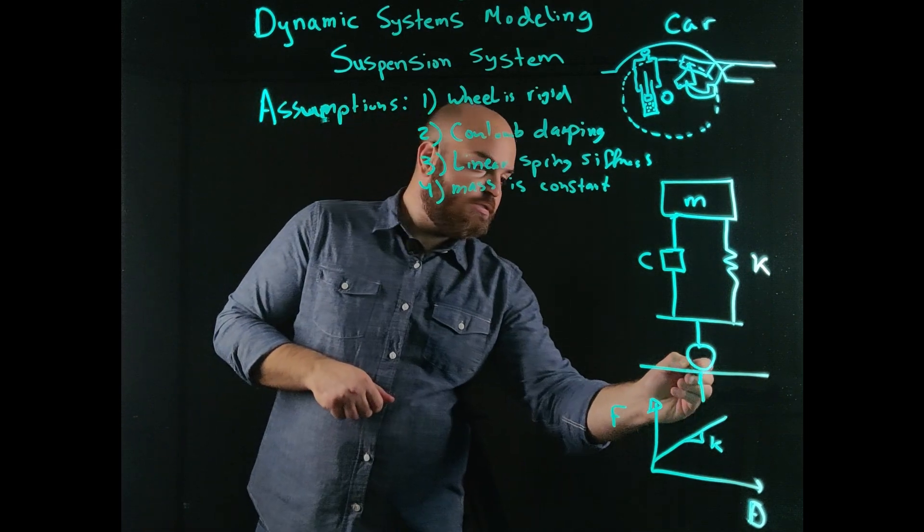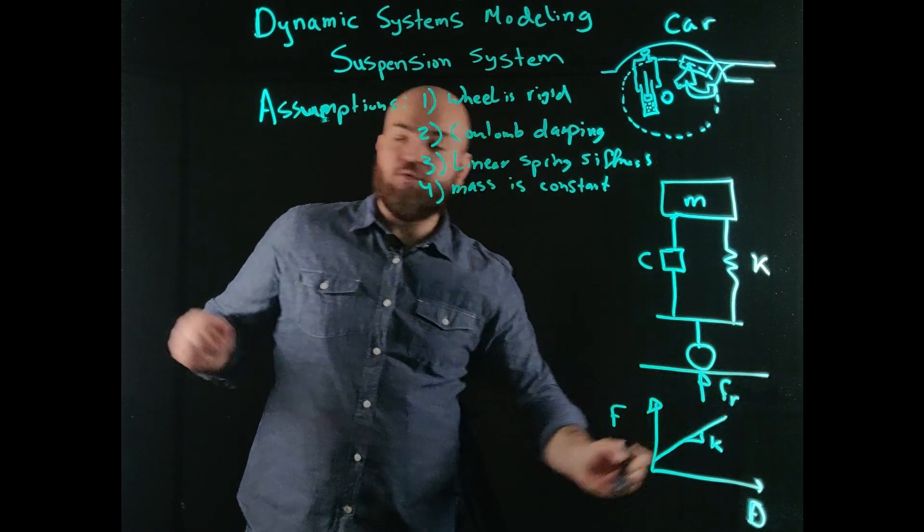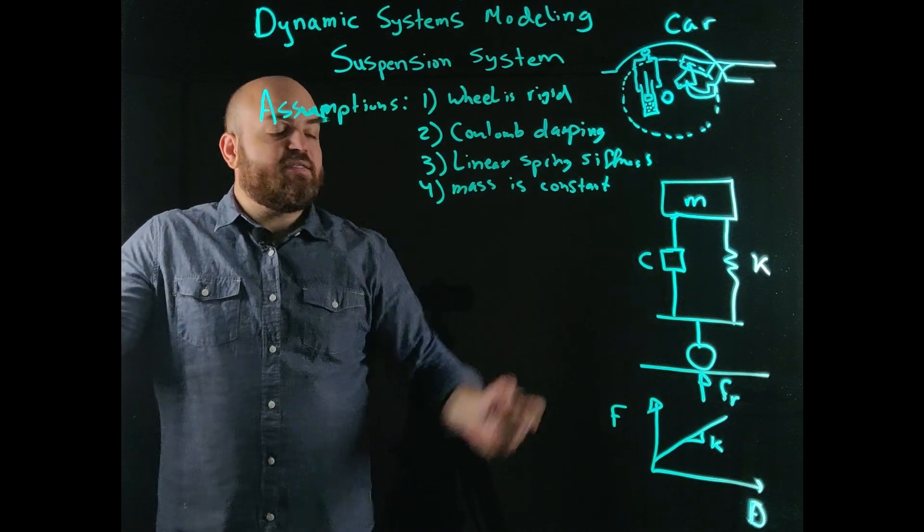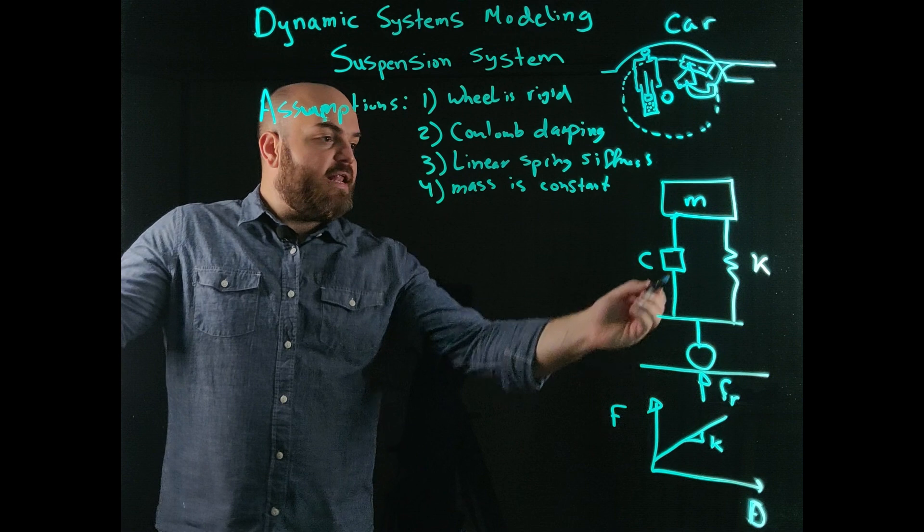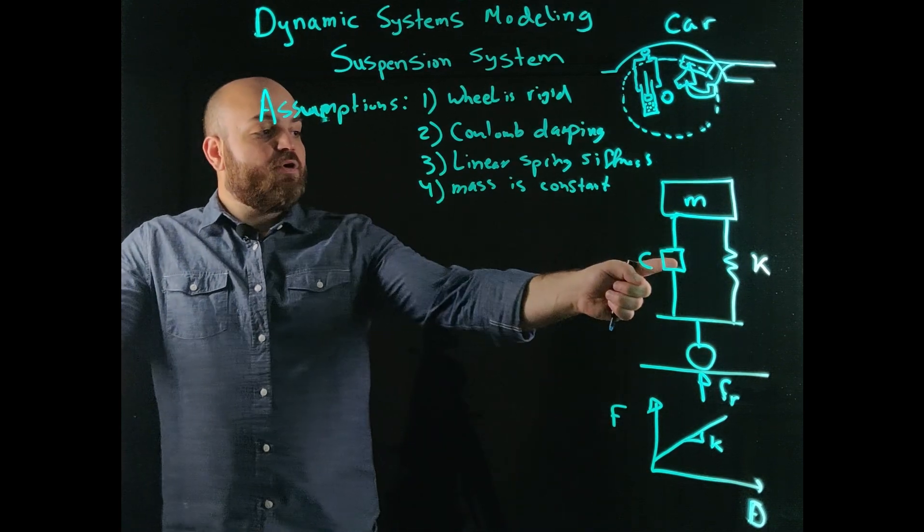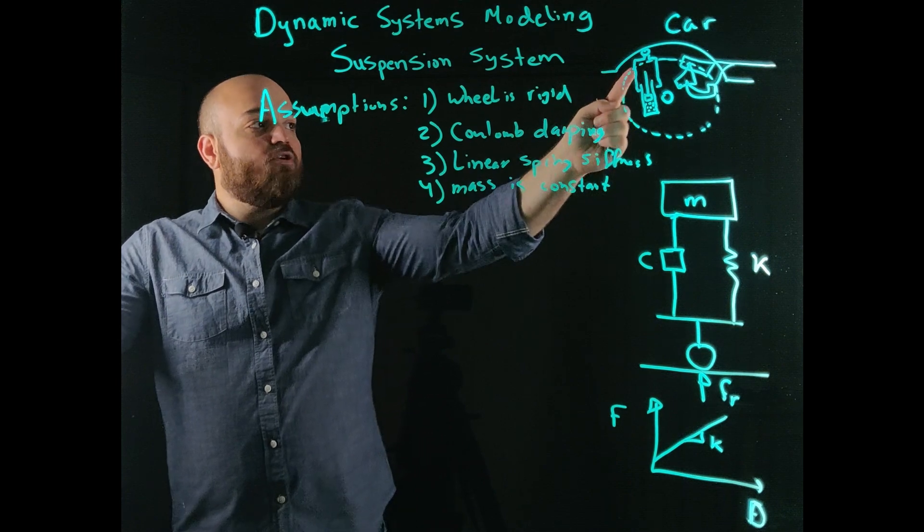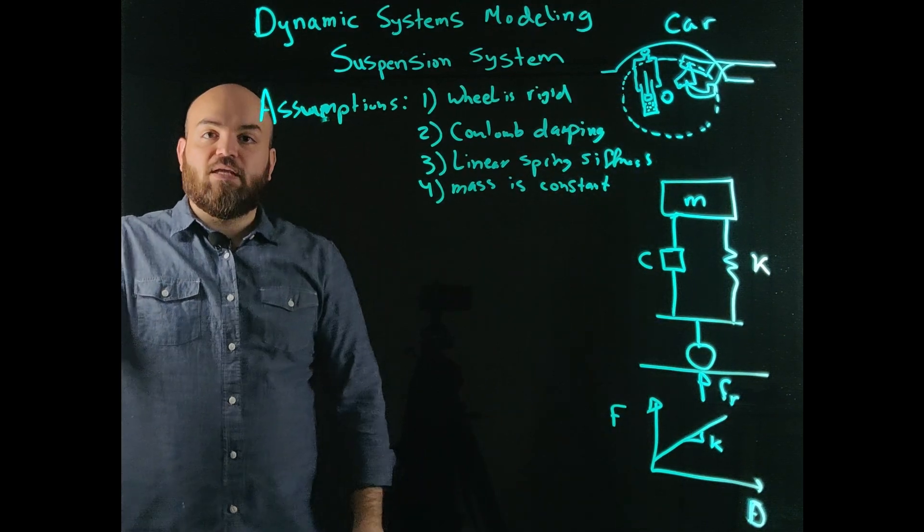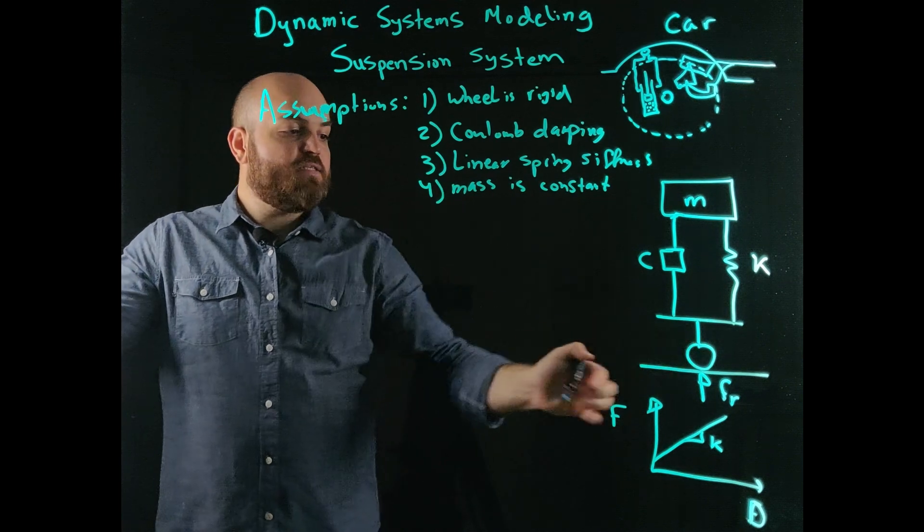So I have this force of the road, FR. There's this force that the road is applying to my system. And I have a damper and I have a stiffness. Now, if this damper, if this cylinder wasn't here and if this suspension wasn't here, this force would be directly transmitted. Because the wheel is assumed to be rigid.